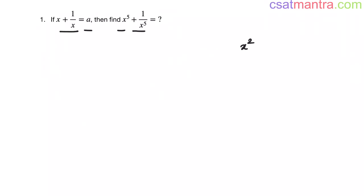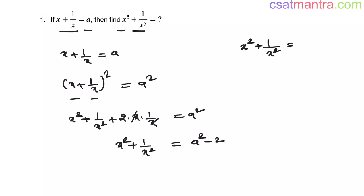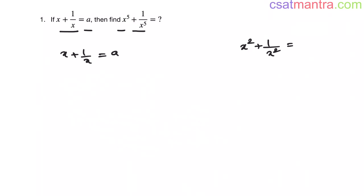We have seen how to find x square plus 1 by x square when x plus 1 by x is given — just squaring it on both sides. x plus 1 by x whole square equals a square. This is a plus b whole square, so a square plus b square plus 2ab. The x terms cancel, giving us x square plus 1 by x square equals a square minus 2.